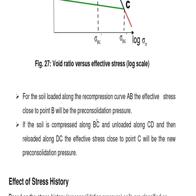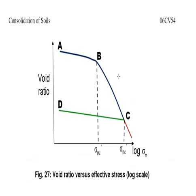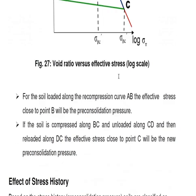Similarly, if the soil is compressed along B to C, unloaded along C to D, and then reloaded along D to C again, the effective stress close to point C will be the new Pre-Consolidation Pressure.